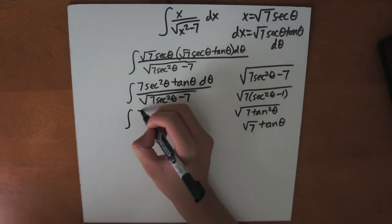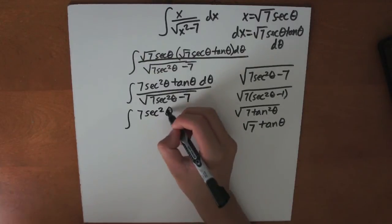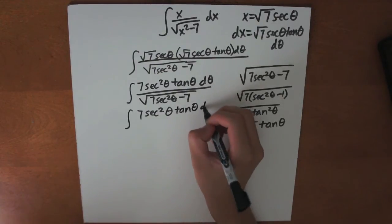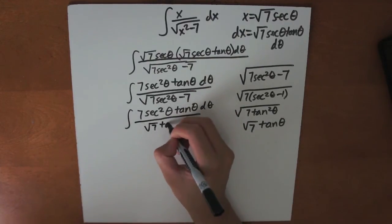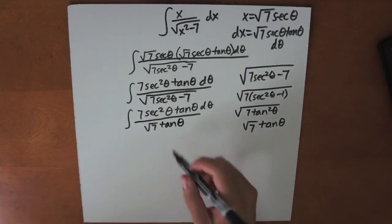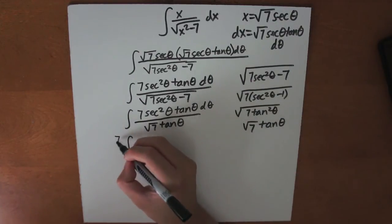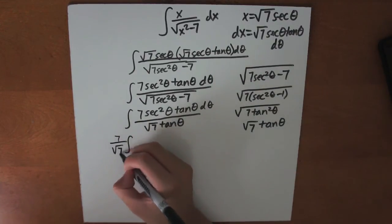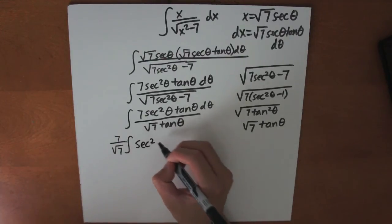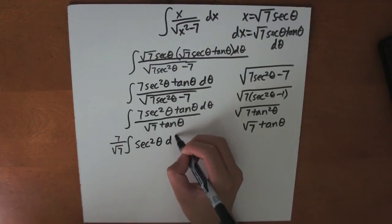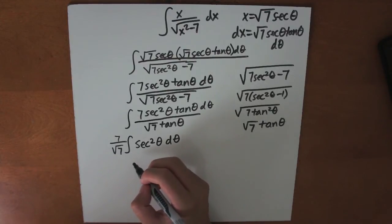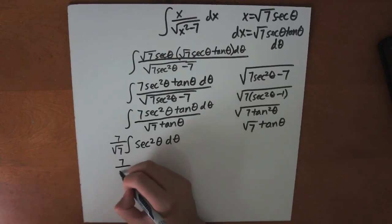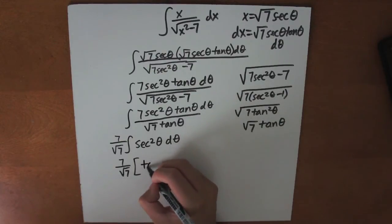Plugging the simplified square root back in, the integral becomes 7 secant squared theta tangent theta d theta over the square root of 7 tangent theta. Simplifying, this becomes 7 over the square root of 7 times the integral of secant squared theta d theta. The integral of secant squared theta is tangent theta, so this becomes 7 over the square root of 7 times tangent theta.